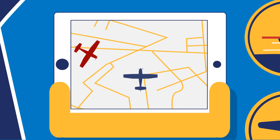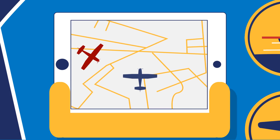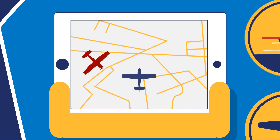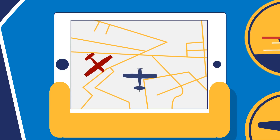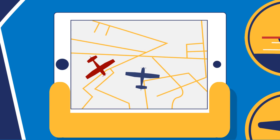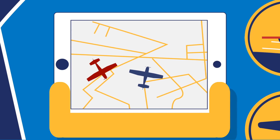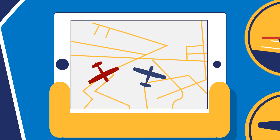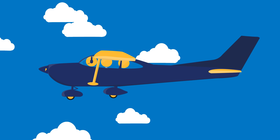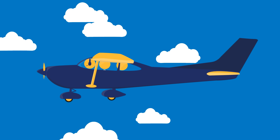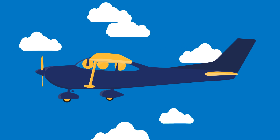ADS-B — Automatic Dependent Surveillance Broadcast — will make you visible and allow you to see other equipped aircraft. Flying like this is fun and safe.